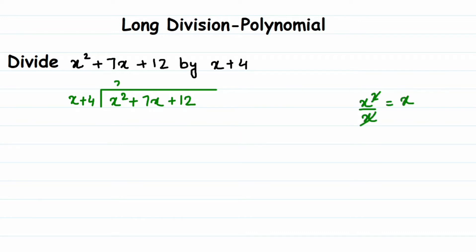Now the second step is to multiply the divisor with this quotient term. Multiply both x and 4 by x: x times x is x squared, plus 4 times x is 4x. Don't forget to multiply the 4 as well.